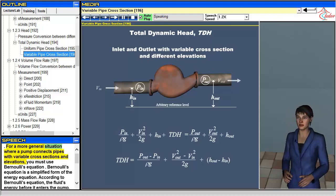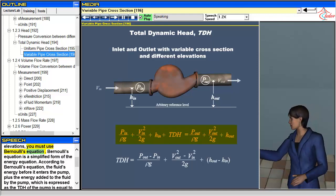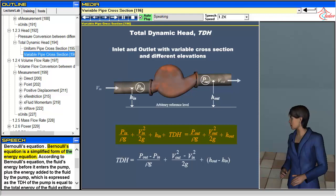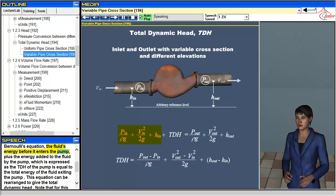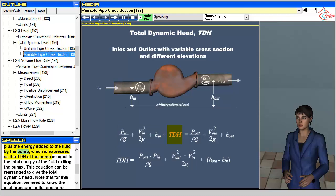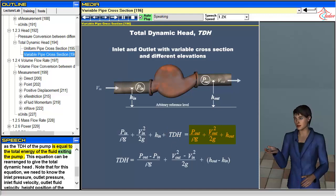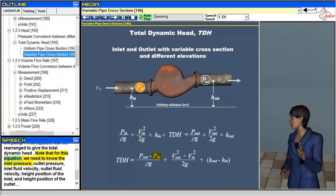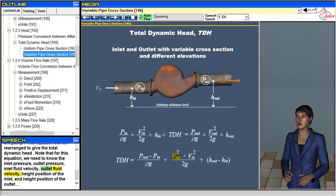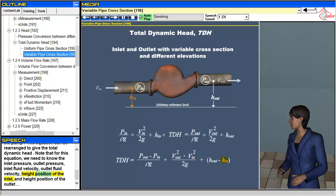For a more general situation where a pump connects pipes with variable cross sections and elevations, you must use Bernoulli's equation. Bernoulli's equation is a simplified form of the energy equation. According to Bernoulli's equation, the fluid's energy before it enters the pump, plus the energy added to the fluid by the pump, which is expressed as the TDH of the pump, is equal to the total energy of the fluid exiting the pump. This equation can be rearranged to give the total dynamic head. Note that for this equation, we need to know the inlet pressure, outlet pressure, inlet fluid velocity, outlet fluid velocity, height position of the inlet, and height position of the outlet.